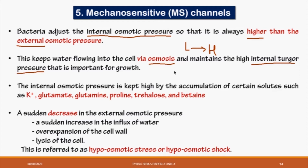Here we also see the term 'internal turgor pressure.' Turgor pressure is similar to osmotic pressure — it is basically the pressure exerted on the cell wall or cell membrane. When you studied plant cells, you would have heard of turgor pressure. So the cell always ensures water can enter: it keeps internal solute concentration a little higher than the environment, so water enters the cell by itself without any force.